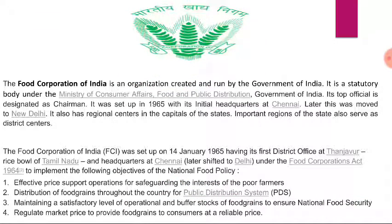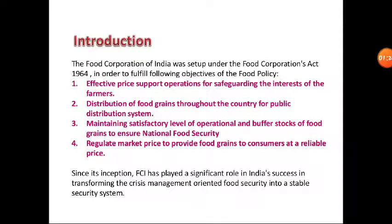The main objective of the Food Corporation Act of 1964 is to satisfy the objectives of the National Food Policy. The first objective is effective price support operations for safeguarding the interest of the farmers, protecting them from intermediaries who were taking undue advantage and enjoying higher profits, harming the interests of both consumers and farmers.